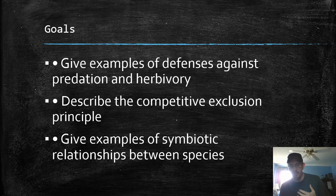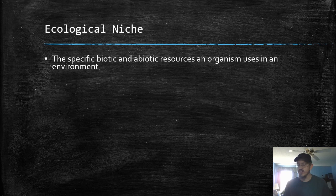Community ecology part one. We're going to talk a little bit about defenses against predation and herbivory. We're going to talk about competitive exclusion principle and a little bit about symbiosis. So let's start with competitive exclusion and this idea of what a community is.